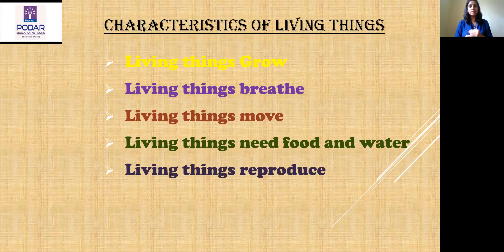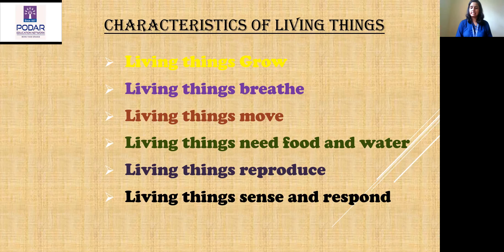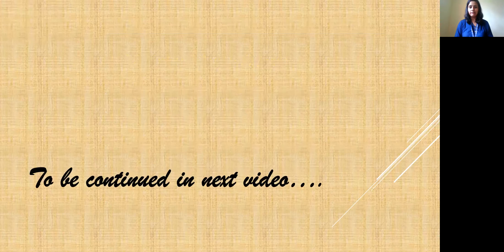We human beings give birth to a baby, and animals also give birth to small young ones. So living things reproduce — we will learn this in detail in the next video. Living things also sense and respond. These living things have senses — we know about the five senses — and living things can sense and respond to those senses. These are all the characteristics of living things. One by one, we are going to study about these characteristics in detail in the next video.